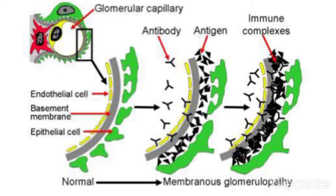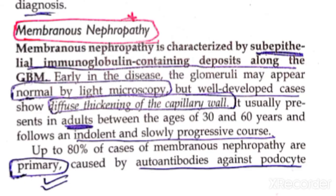To recap: minimal change disease was for children, focal segmental glomerulosclerosis was for adults, and membranous nephropathy is also an important disease to cover.